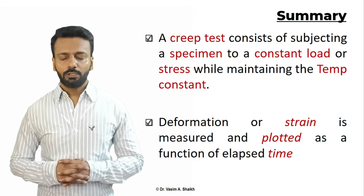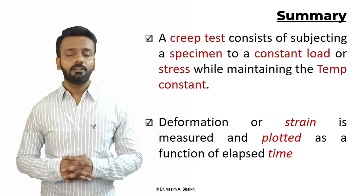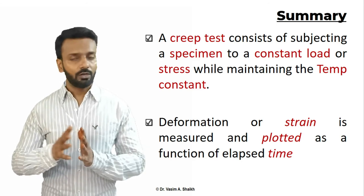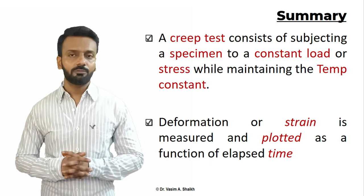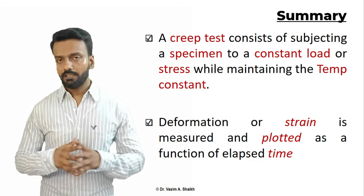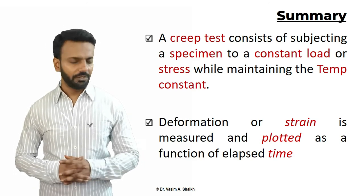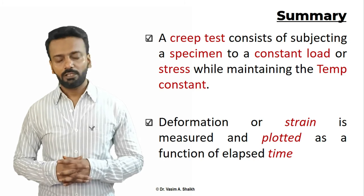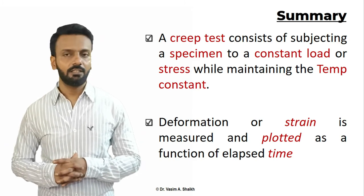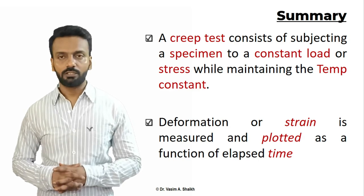To summarize: creep testing requires an apparatus where the material is held under constant load at a constant elevated temperature. The strain rate is plotted against time, yielding three stages — primary, secondary, and tertiary. In the primary stage, the slope decreases due to work hardening. In the secondary stage, strain hardening competes with recovery keeping the creep rate constant. In the tertiary stage, the strain rate accelerates dramatically until the material fails. The secondary stage is the most important parameter for creep analysis.